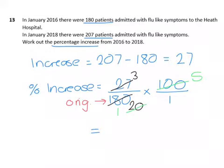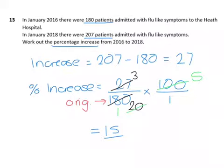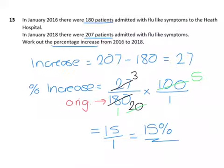Just multiplying fractions — multiplying the numerators together, 3 times 5 is 15. And multiplying the denominators together, 1 times 1 is just 1. So 15 divided by 1 is 15. Therefore our final answer is that it was a 15% increase.